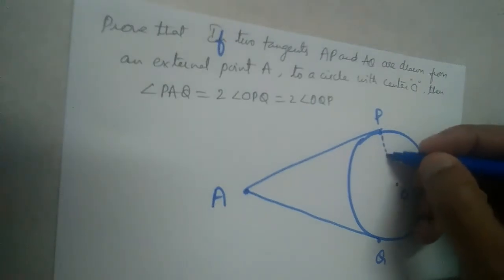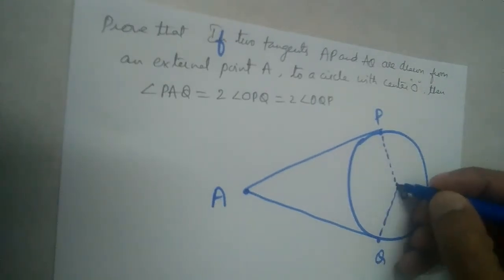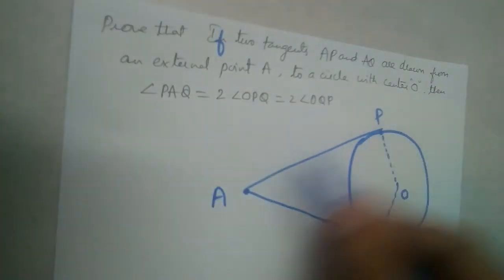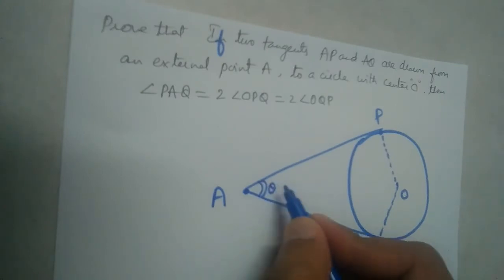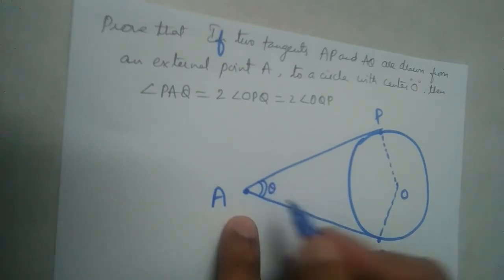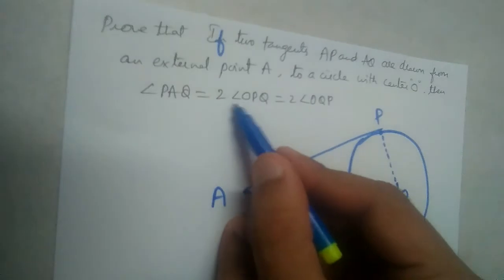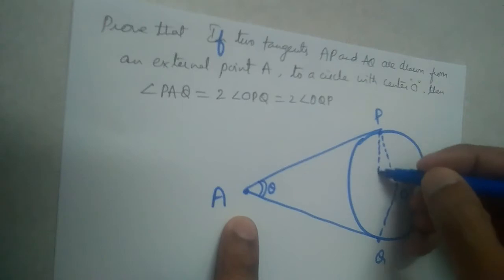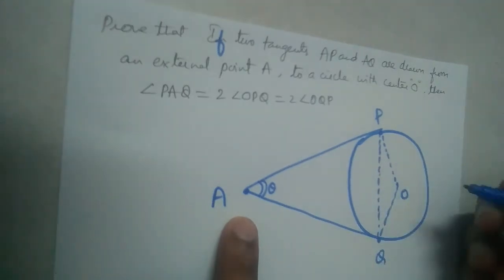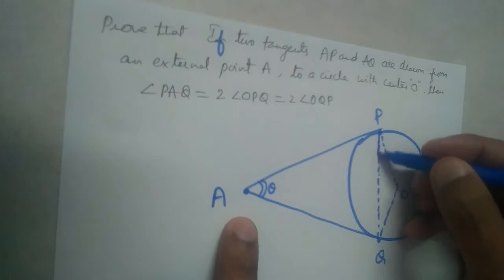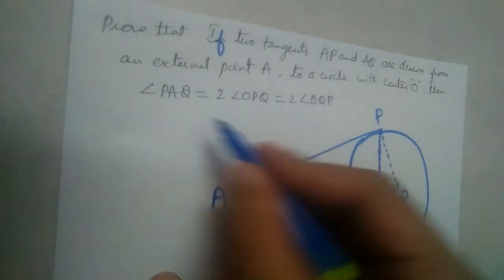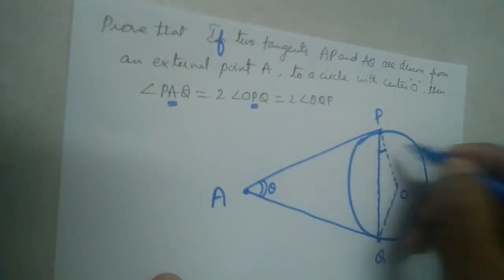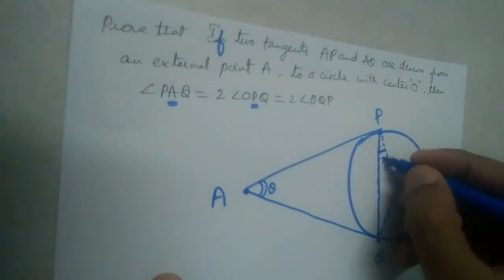Let O be the center of the circle. We join OP and OQ. We need to prove that angle PAQ — let us call this angle theta — is twice the angle OPQ. Let us also join PQ, and we should prove that angle A is two times this angle. Let the angle OPQ be x.